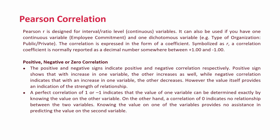A correlation could be positive, negative, or zero. The positive and negative signs indicate positive and negative correlation respectively. A positive sign shows that with an increase of one variable, the other increases as well. A negative correlation indicates that with an increase in one variable, the other decreases. The value itself provides an indication of the strength of the relationship — the correlation coefficient R is a measure of strength of relationship.